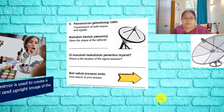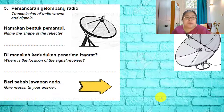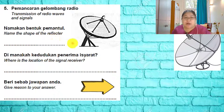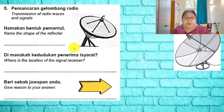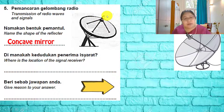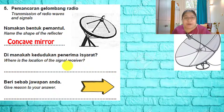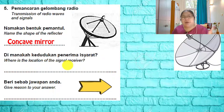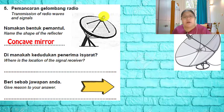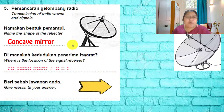Question five is about transmission of radio waves and signals using a parabolic satellite. The shape of the reflector is concave. The question asks where the receiver should be located. Since the signal comes from a far distance, the waves are parallel, and parallel rays focus at the focal point after reflection — so the receiver must be placed at the focal point.